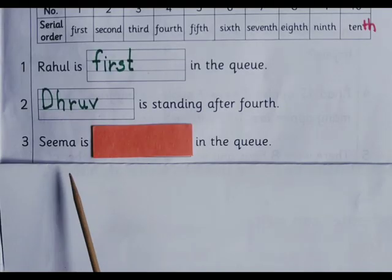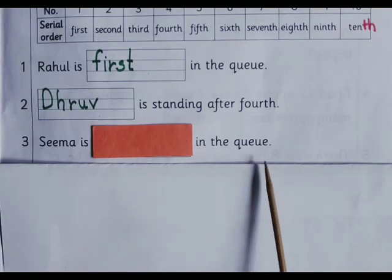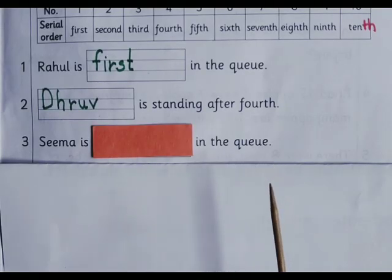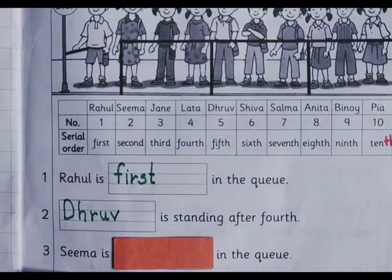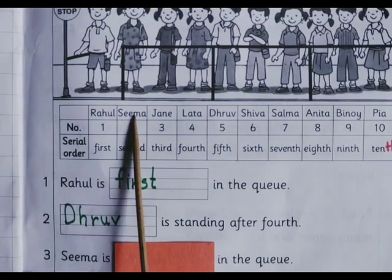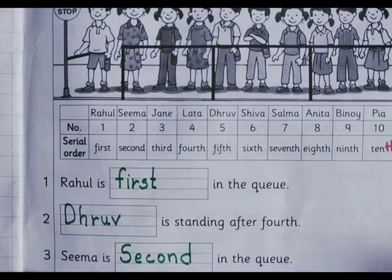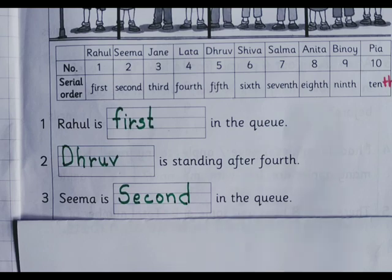Seema is dash in the queue. Seema — 2nd. Seema is second in the queue.